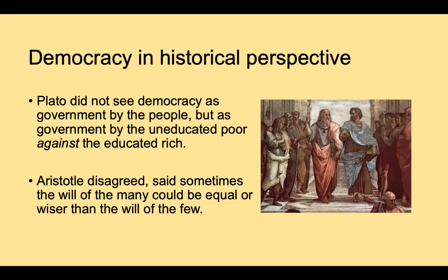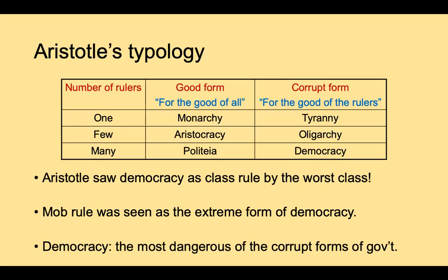Aristotle disagreed, saying that sometimes the will of the many could be equal to or wiser than the will of the few. But Aristotle himself was ultimately also skeptical of the capacity of ordinary people to govern themselves, and by extension skeptical of democracy. This skepticism legitimated forms of government we would think of as more authoritarian — monarchy, tyranny, or at least the concentration of power in the hands of a few.